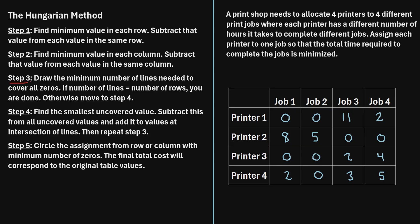Now we move to step three of the algorithm: draw the minimum number of lines needed to cover all zeros. If the number of lines equals the number of rows, you are done. Drawing only horizontal and vertical lines to cover as many zeros as possible, we can cover all zeros using three lines — two vertical and one horizontal. Because we only needed three lines but there are four rows in our matrix, we are not done, so we move to step four.